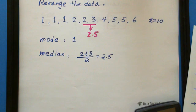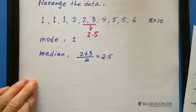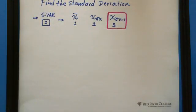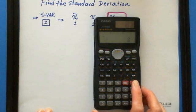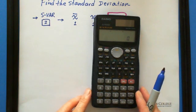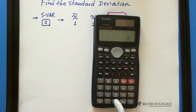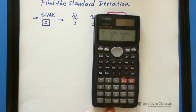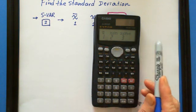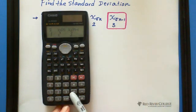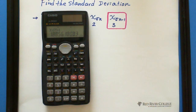Next I show you how to find the standard deviation. The standard deviation, you're still using this button, S VAR which is shift 2. We use x sigma n minus 1, this button press 3, you got 1.8856.